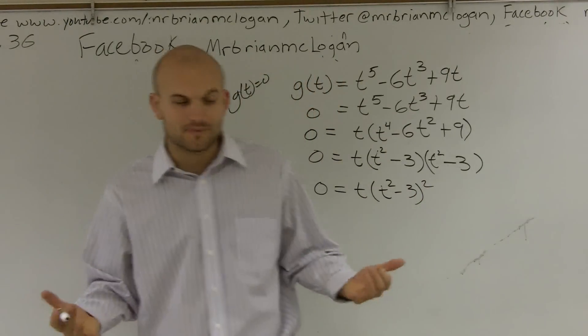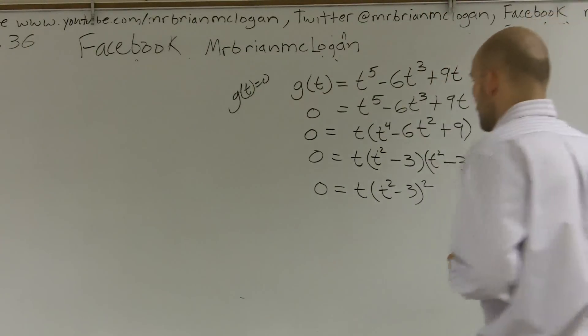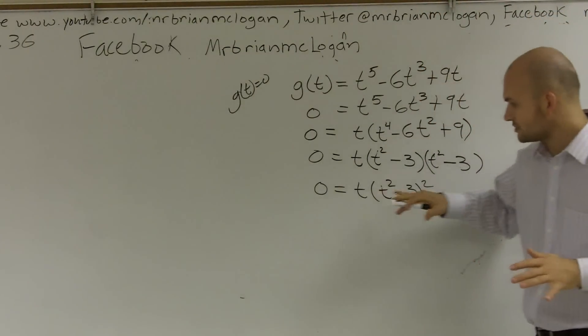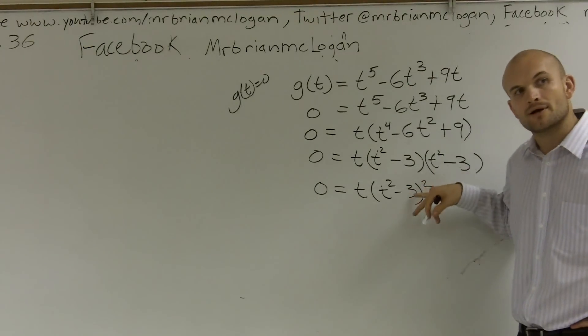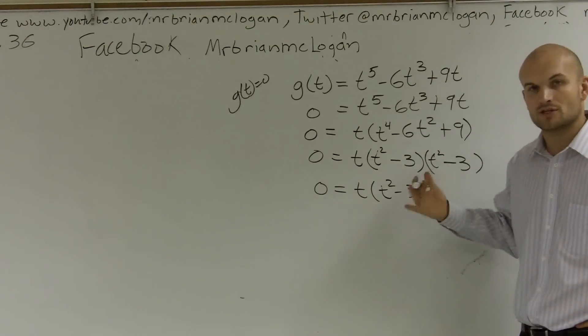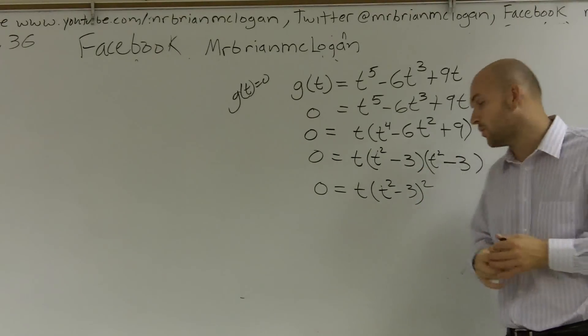And why is this so important? Well, because, ladies and gentlemen, when we're looking at multiplicity of a zero, we need to know when our zeros are written as factors. If they are to an even power, they are going to give us a multiplicity of two. And if they're to an odd power, they're going to give us a multiplicity of one.